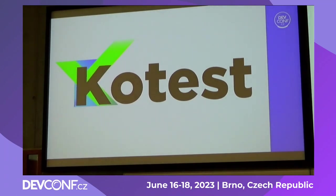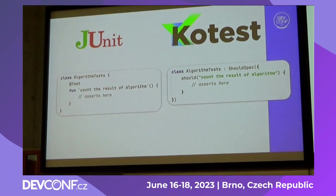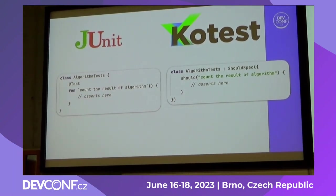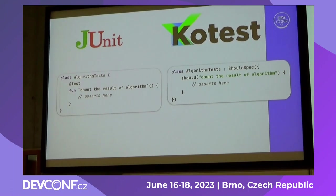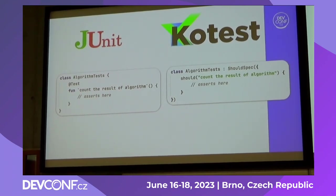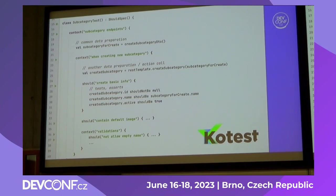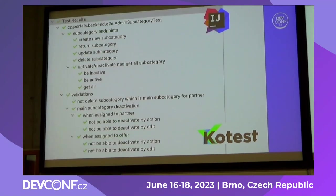Why do I like Kotest? Maybe you are familiar with JUnit. The main difference is that Kotest utilizes running ordinary functions — so tests are functions, not function calls like in JUnit. It means you can structure them. Here you can prepare some data, here another data, here is the test, and you can create a whole test suite. When I run the tests in IntelliJ IDEA, I can run a single test in TDD or a whole group of tests when I want to.